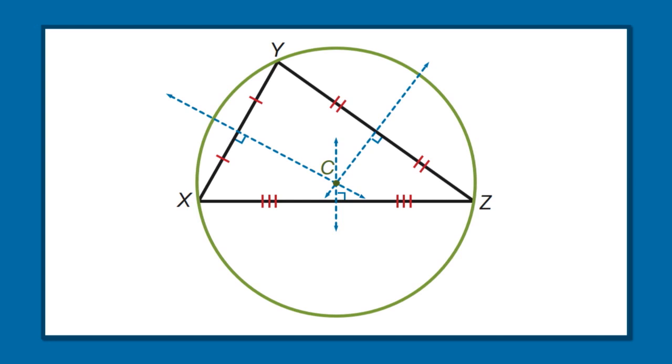That theorem is related to a very interesting fact. If point C, the circumcenter, is equidistant from all three vertices and CX, CY, and CZ are all equal lengths, then there exists a circle that passes through X, Y, and Z with its center at C. This circle is called a circumscribed circle because it passes through all the vertices of the triangle. Any circle that passes through all the vertices of a polygon is said to be circumscribed around that polygon. X, Y, and Z are both vertices of the triangle and points on the circle. The three sides of the triangle are all chords, and segments CX, CY, and CZ would be radii of the circle.